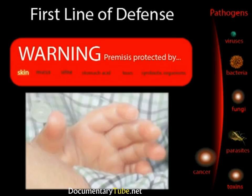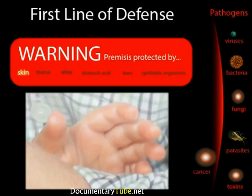The skin is part of the integumentary system. The keratin in skin cells makes skin waterproof, allowing skin to act as a barrier keeping foreign invaders out. Sweat washes the surface of the skin and helps lower the pH of the skin. Those low pH environments inhibit the growth and activity of many pathogens. The sebaceous glands secrete oil which contains antibacterial substances.